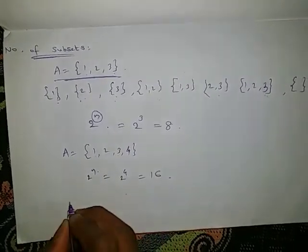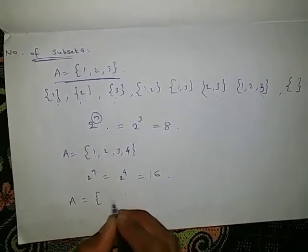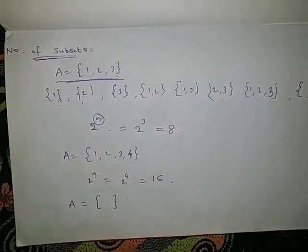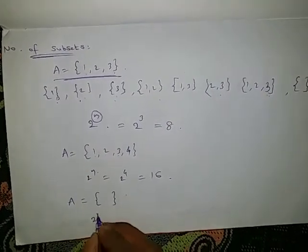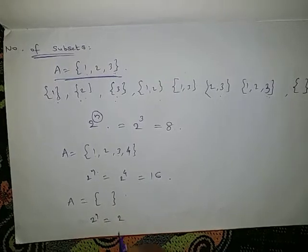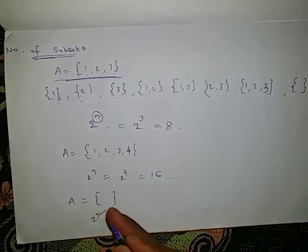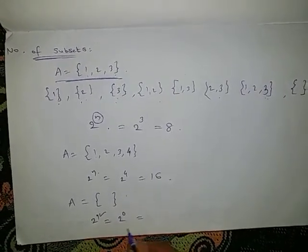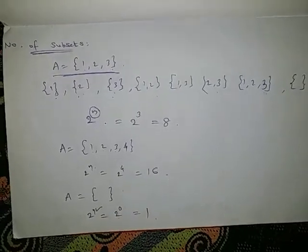Then what about this question: A equals the empty set — how many subsets will there be? Using 2 power n, the number of elements is 0, so 2 power 0 = 1. Any number to the power 0 is 1.